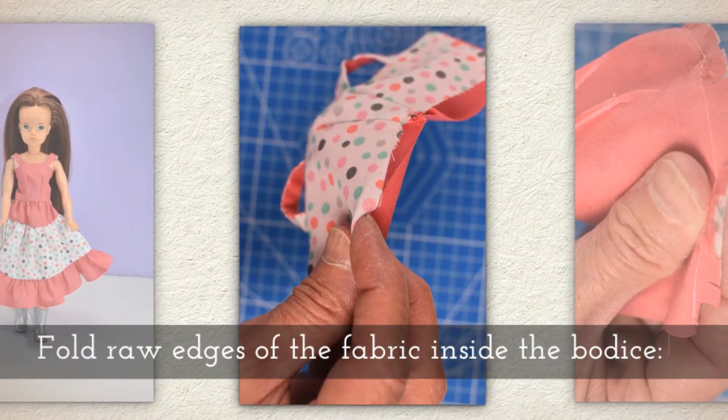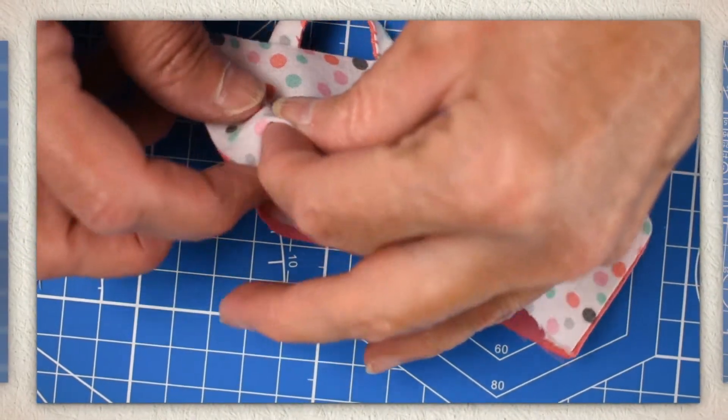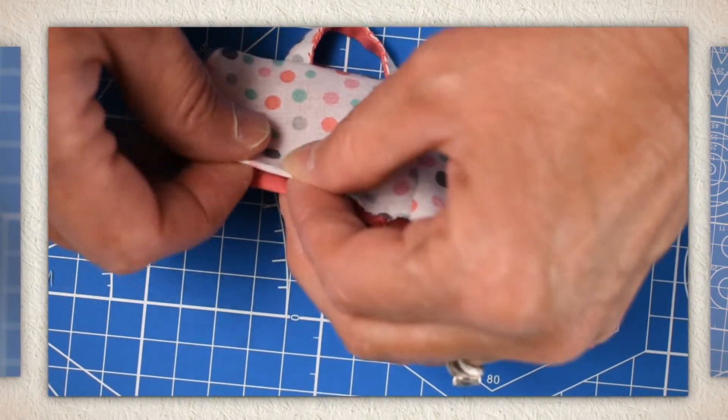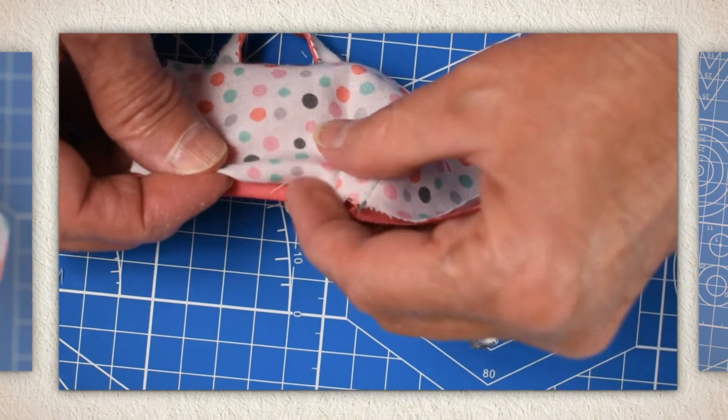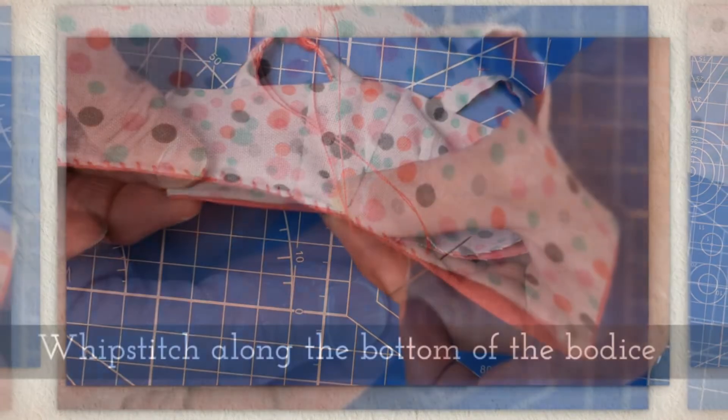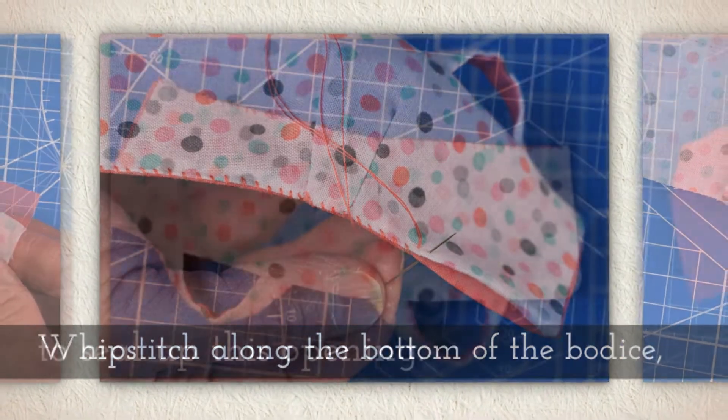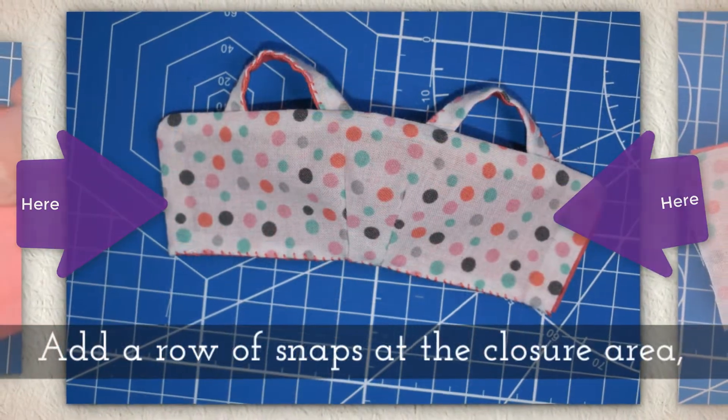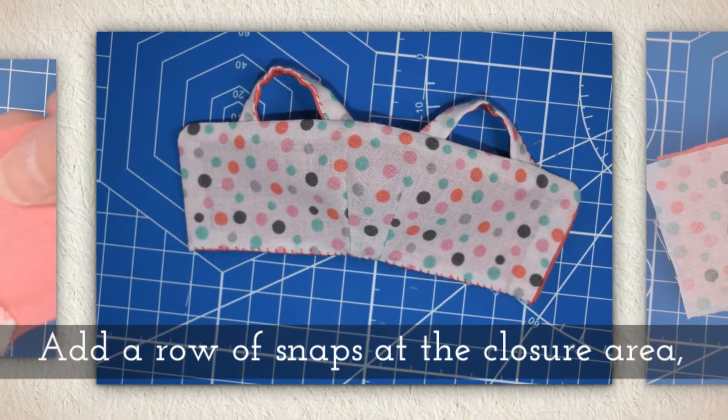Fold the raw edges of the fabric at the bottom of the bodice inside itself. Think of it like making a little puppet mouth like when you make a sock puppet. You fold it inside and then you're going to whip stitch along the bottom of the bodice like you see me doing here to seal up this opening. Now we're almost done. We just need to add a row of snaps at that back closure area.